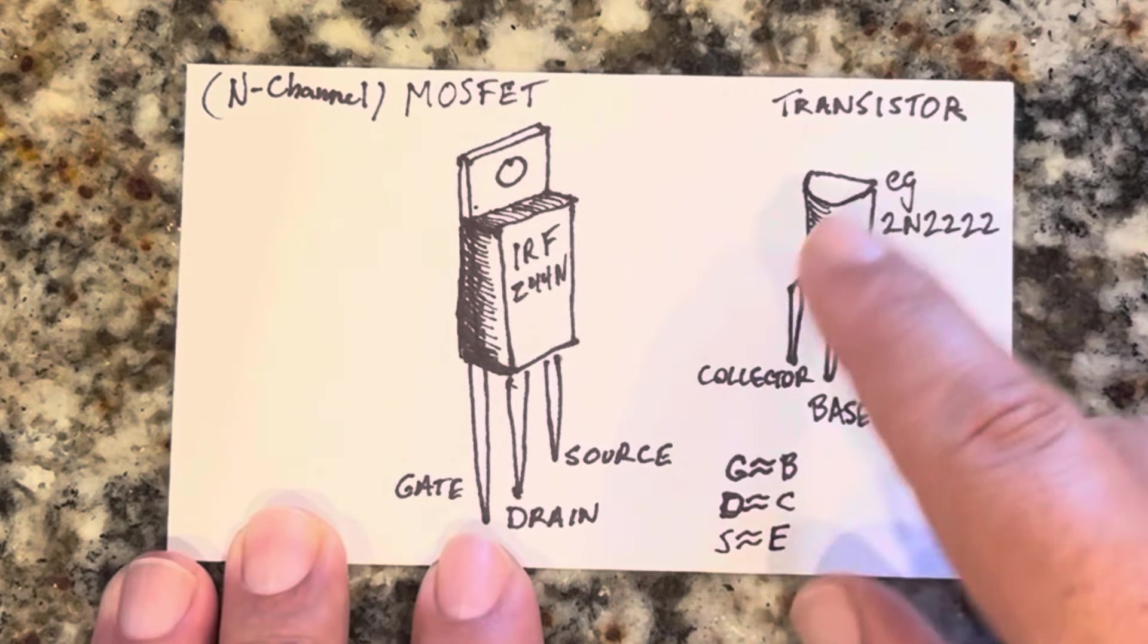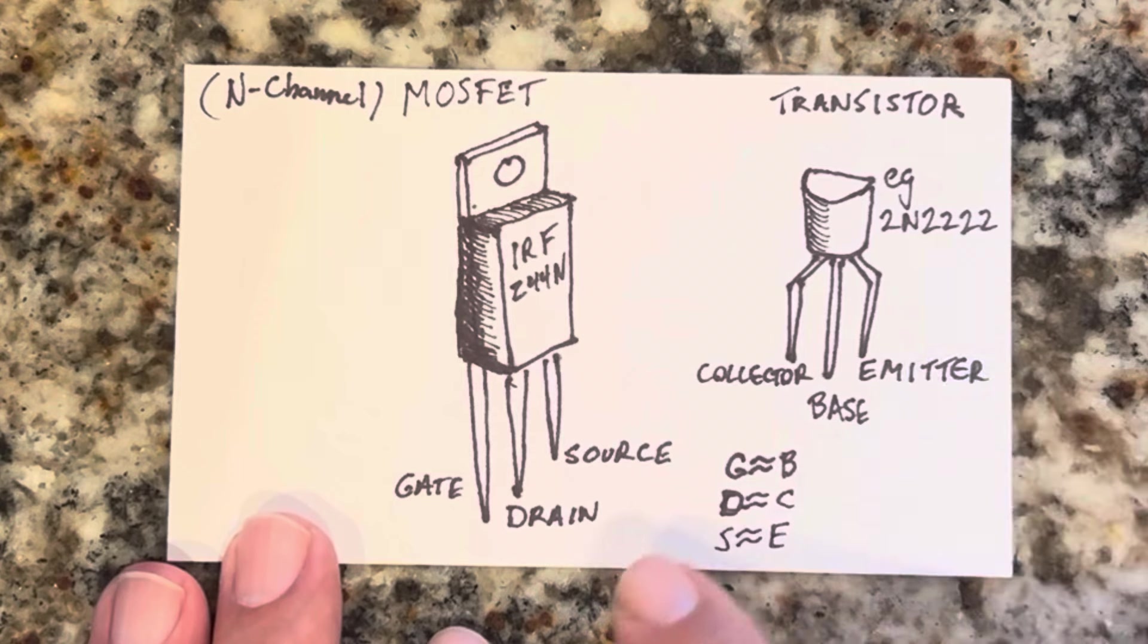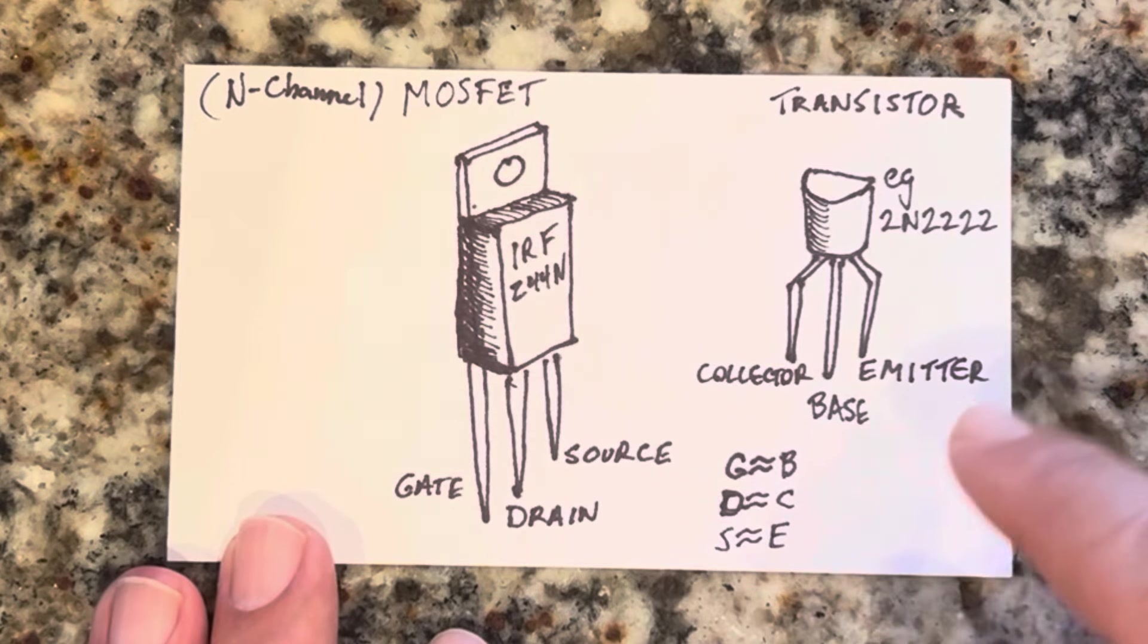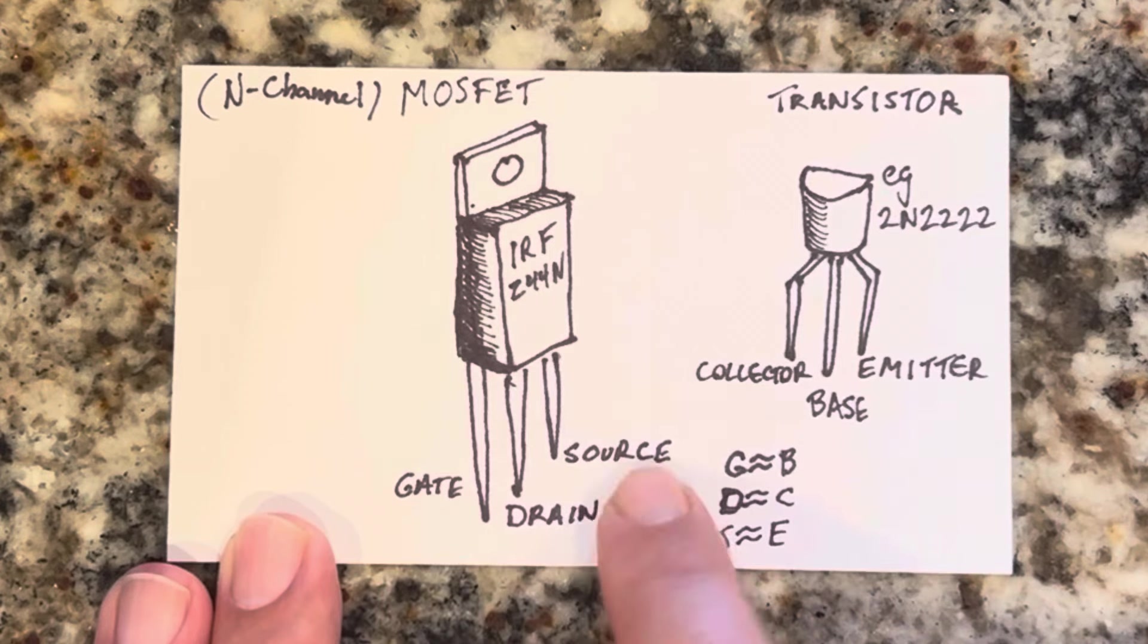If you look at a transistor, a transistor has a collector, a base, and an emitter. The MOSFET has similar things, but instead it has a gate, a drain, and a source.